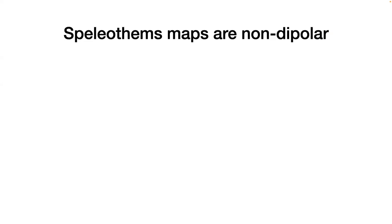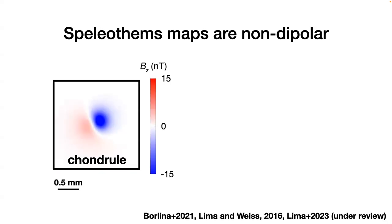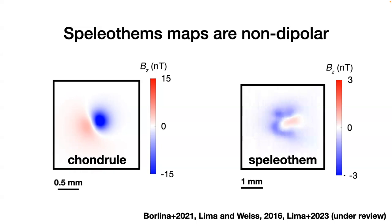One of the first things you notice when measuring a speleothem with a SQUID microscope is that the magnetic field maps are non-dipolar. For comparison, a chondrite measured with the SQUID shows a generally dipolar structure — you can fit a dipole and obtain a magnetic moment. The general SQUID microscope workflow is: obtain a magnetic field map and use inversion techniques to obtain the magnetic moment. When we look at speleothems, however, the maps look very different — they are really not dipolar, and if you try to fit a dipole, you won't get anything meaningful.